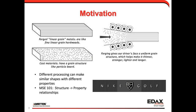I've been doing EBSD for over 20 years, and this slide captures the motivation I have for characterizing microstructure and how processing can influence it, tying that into additive manufacturing. This is a set of images from Nike Golf — I'm a golfer, so golf clubs interest me. It showed the idea that if you process materials differently, you get a different grain structure or microstructure. The top left shows a forged microstructure with linear grains; the bottom left shows a cast microstructure with a more random distribution.